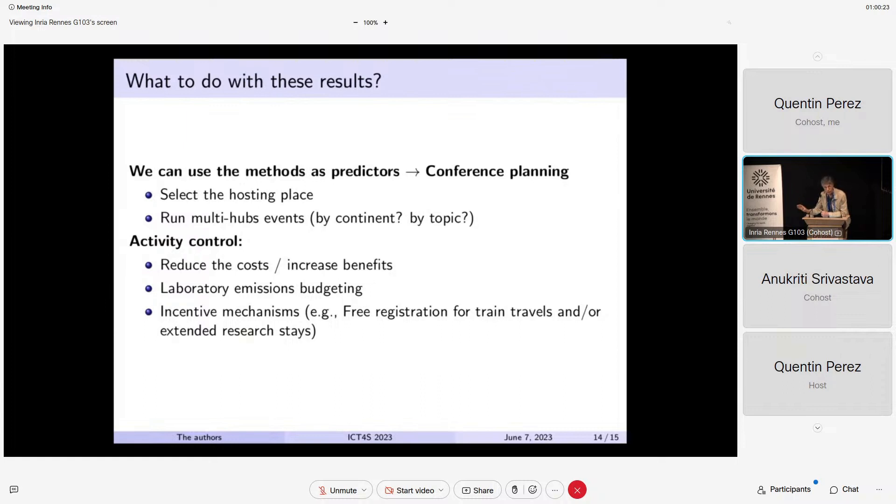We have also some ideas of running multi-hub events, because probably here, as you can see in the results, the contribution of the travel was mainly done by people who are on continental flights. And what we can do here is to use some incentives, and we have to reduce costs and increase the benefits of being physically present at the conference. And we can think about free registration for those who travel by train, which is something that I proposed that they don't really agree with, I guess.